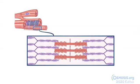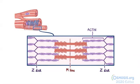Zooming in further, the sarcomere has two Z-discs forming its boundary and an M-line in the middle. Attached to the Z-discs are thin filaments made of actin protein. These actin filaments have structural polarity — we can think of them like arrows, with the minus end pointing towards the M-line and the plus end attached to the Z-disc. Like an arrow, the actin filament can only move in the direction it's pointed.